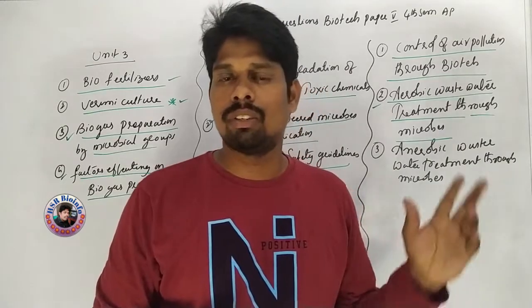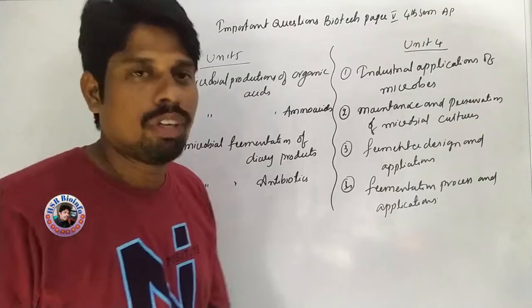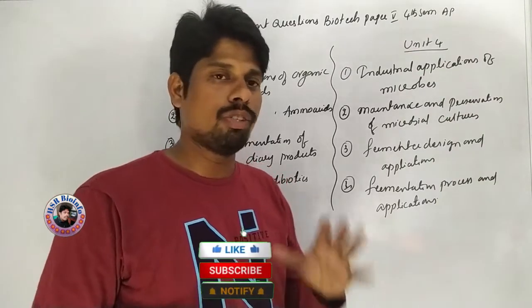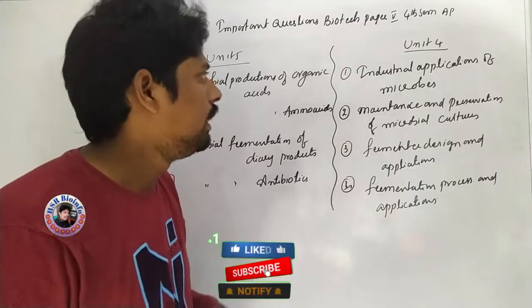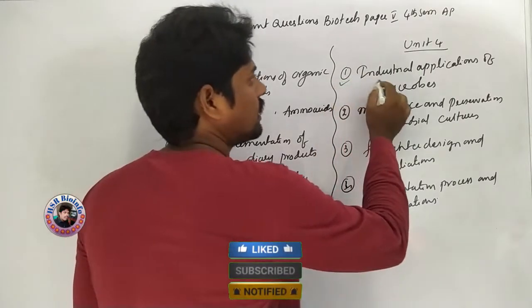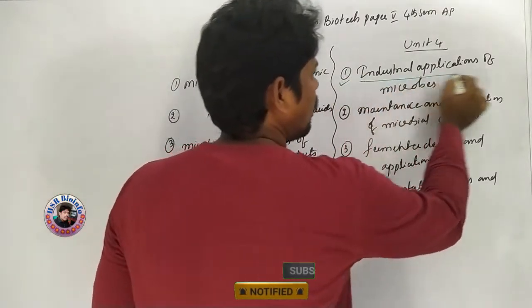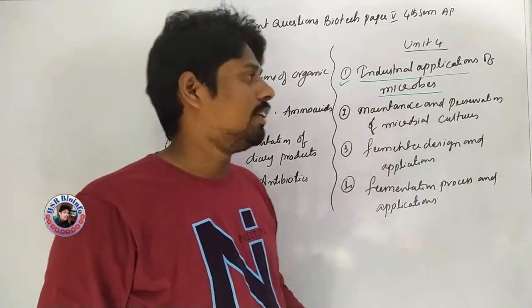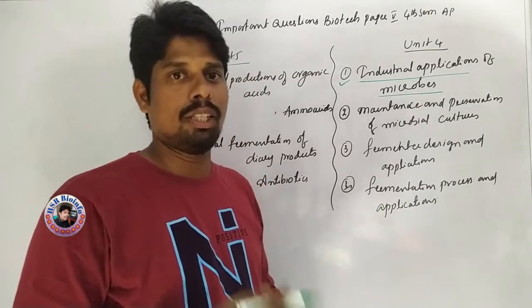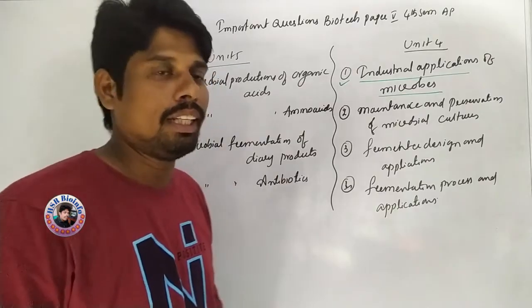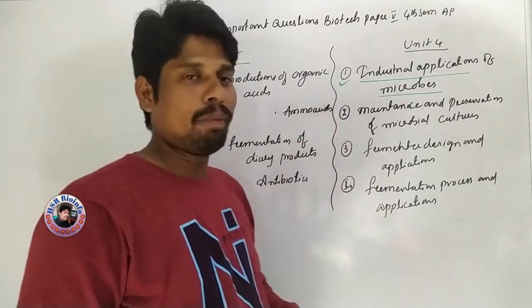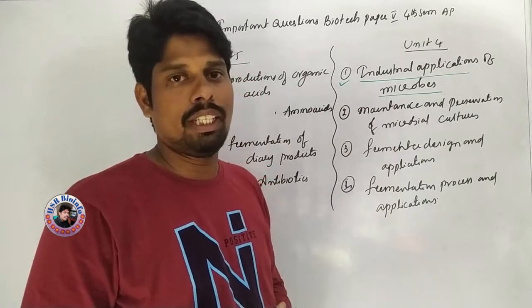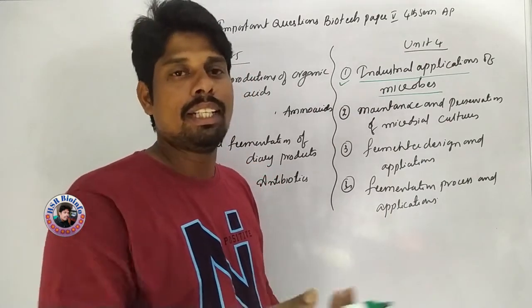The first important question in the remaining units is the industrial application of microbes — different kinds of microbes used at the industry level, their productivity, and how microbes are used to increase productivity in general society.